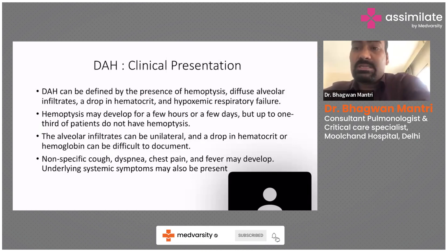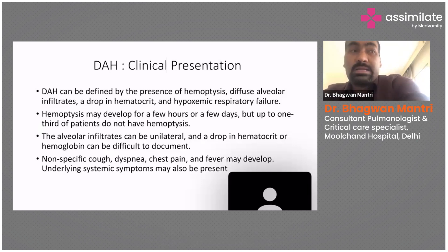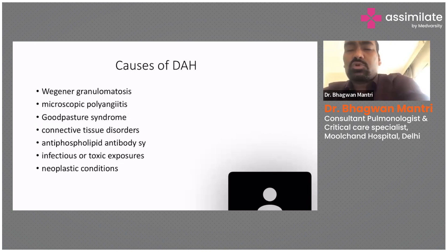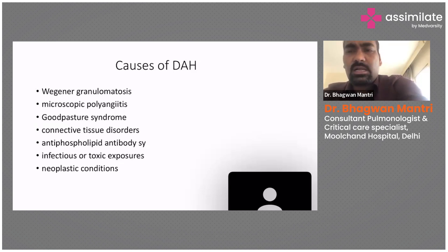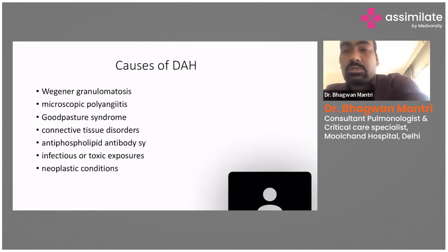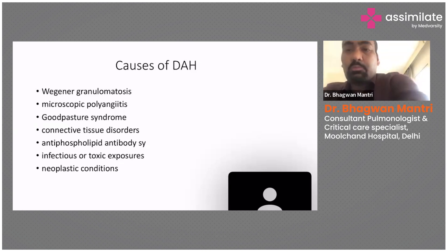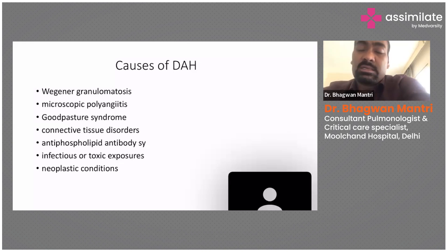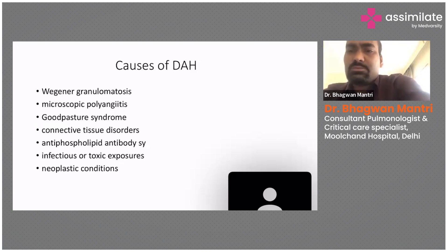Along with the typical symptoms of dyspnea, anemia, and hemoptysis, the patient may also have mild cough, chest pain, fever, or some underlying symptoms. The causes of DAH are mostly related to immunological or collagen vascular diseases like Wegener's granulomatosis, Microscopic Polyangiitis, Goodpasture syndrome, and antiphospholipid syndrome. It may also be associated with infectious diseases — even a simple viral infection can present with DAH. Surprisingly, we recently encountered patients with dengue who also presented with DAH. Neoplastic conditions are also sometimes associated with DAH. Early treatment results in a wonderful response and reversal of prognosis.